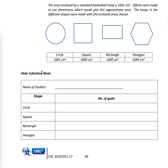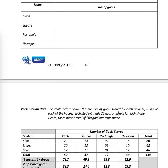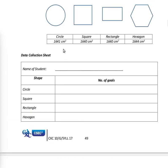Data collection sheet: name of student, shape, number of goals. The shapes recorded were circle, square, rectangle, and hexagon.